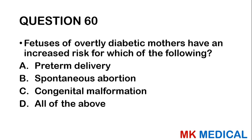Question sixty — the last and final question: Fetuses of overt diabetic mothers have an increased risk of which of the following? A, preterm delivery; B, spontaneous abortions; C, congenital malformations; D, all of the above. The answer is D. Fetuses of overtly diabetic mothers are at risk of preterm delivery, spontaneous abortions, and even congenital malformations.